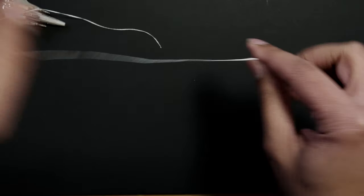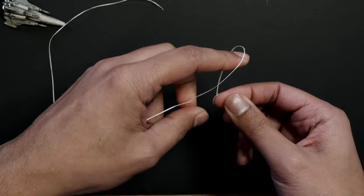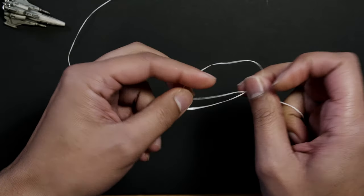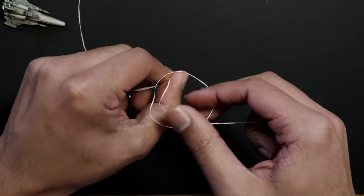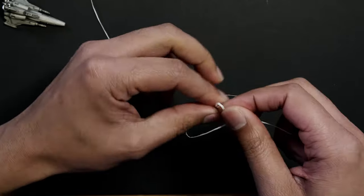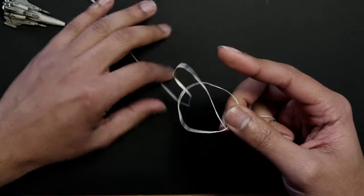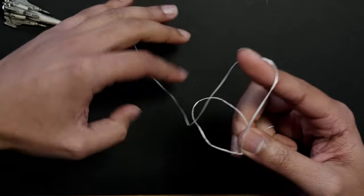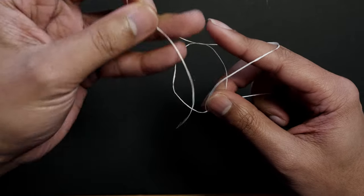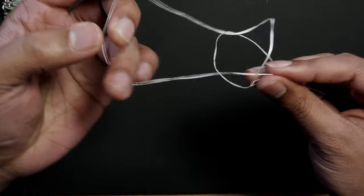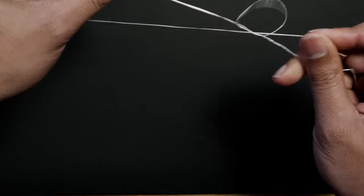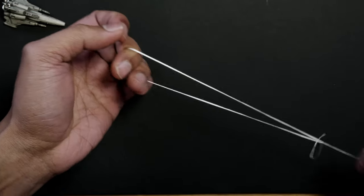The second one is the bowline. So you've got to get a circle. Put the next one through. So you've got another loop coming through. Take the tail. Put it through that. And then tie that up. And now you can pull.